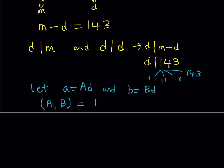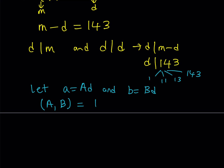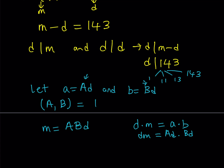Is there a way to express M in terms of D? Since M is a multiple of D, it needs to be D times something. Since big-A and big-B are relatively prime, the least common multiple must contain both big-A and big-B. So M can be written as big-A times big-B times D. You can also verify this using the identity that the product of the GCD and the LCM equals the product of the two numbers.